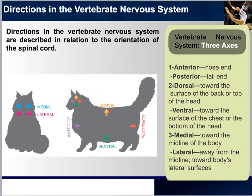Dorsal refers to the top of the spinal cord and brain in quadrupeds. The opposite would be ventral, looking toward the bottom of the spinal cord or brain. The third axis is medial and lateral: medial referring to the midline of the body, whereas lateral is away from the midline facing toward the surfaces.